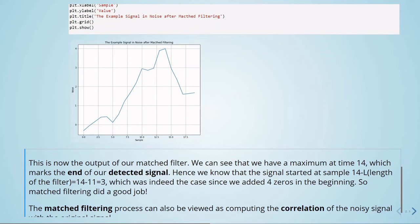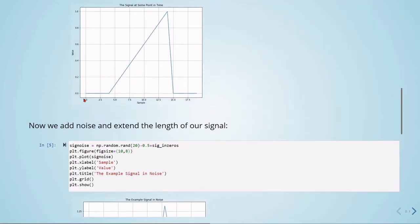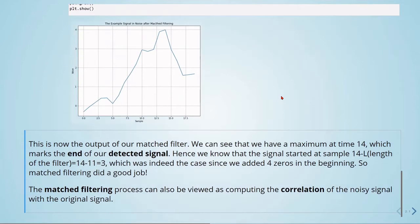And we know that the signal starts at sample 14 minus L, so the length of the filter. So 14 minus 11. So this should be 3, which was indeed the case since we added 4 zeros in the beginning here. In this case, the matched filter did a good job.